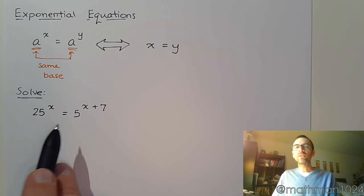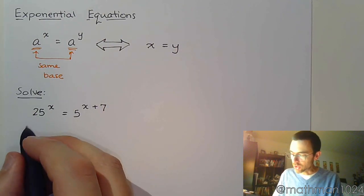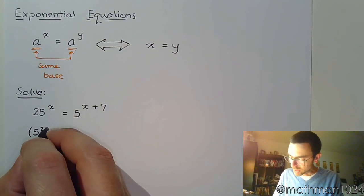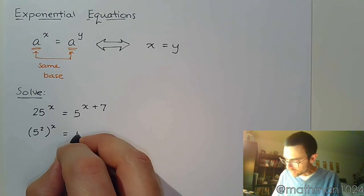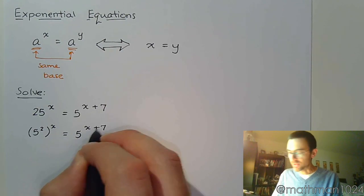So I can rewrite 25 as (5^2)^x, and on the right side 5 is just 5^(x+7).